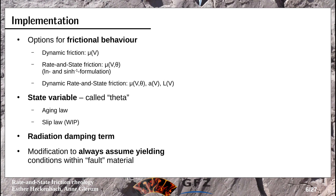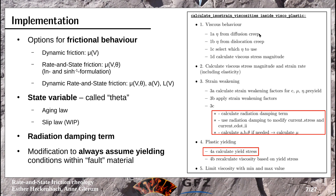In the rheology model itself, I mostly put the changes into the function calculate_isostrain_viscosities in the viscoplastic rheology. First there's the viscosity, elasticity, and strain weakening unchanged, then come my changes: I calculate the radiation damping term from the current second invariant of strain rate as my analog to velocity, use it to modify the strain rate again to remove excess energy, then calculate a, b, and the state variable to get the new friction angle dependent on velocity and state, plus the small change in the yield stress condition.